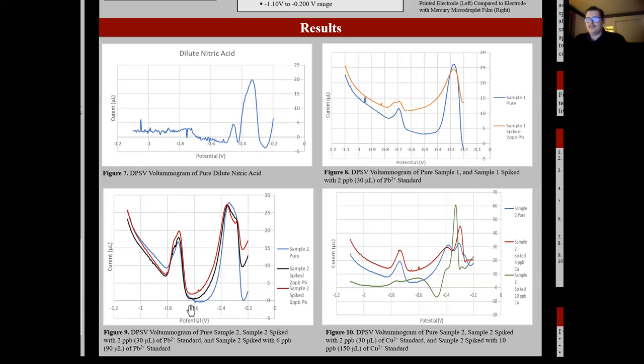You can see another peak in figure nine at about the same place. This is for sample two, and you can again see that it is being spiked with two parts per billion, and then another four parts per billion for a total of six parts per billion of lead standard. You can see this peak growing, showing an increase in lead concentration.